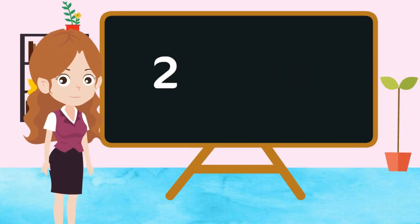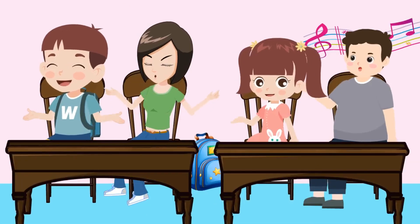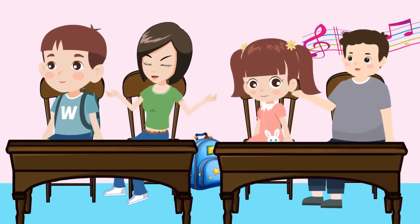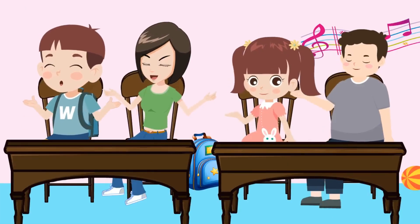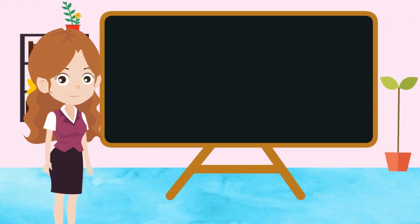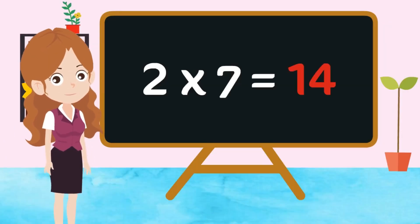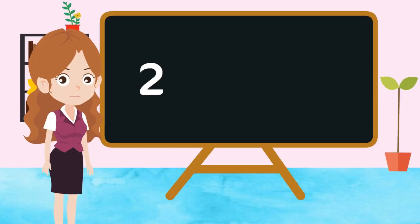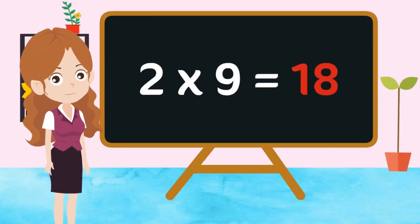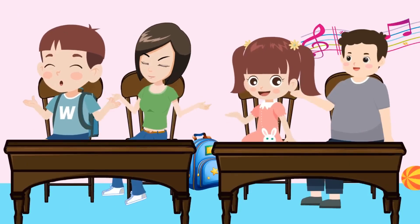Table of 2. 2 1's are 2, 2 2's are 4, 2 3's are 6, 2 4's are 8, 2 5's are 10, 2 6's are 12, 2 7's are 14, 2 8's are 16, 2 9's are 18, 2 10s are 20.